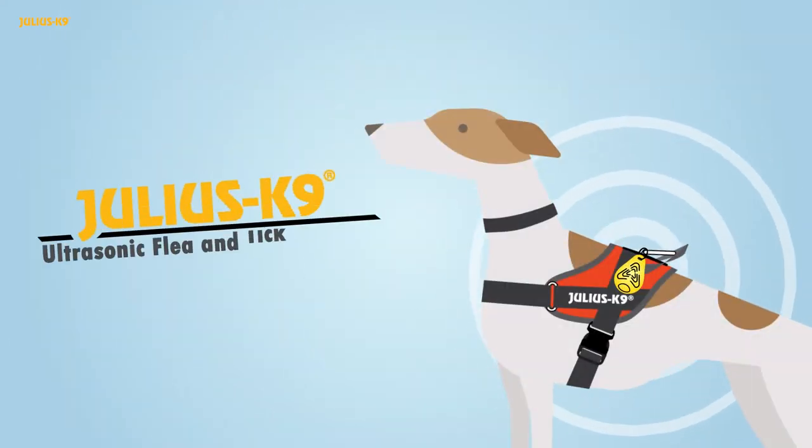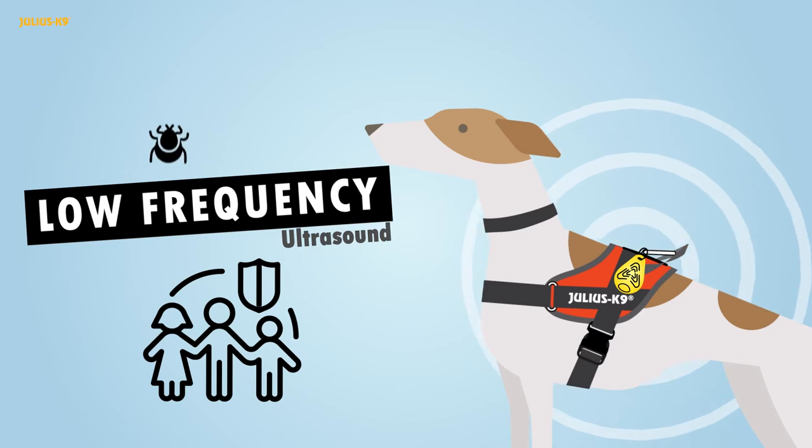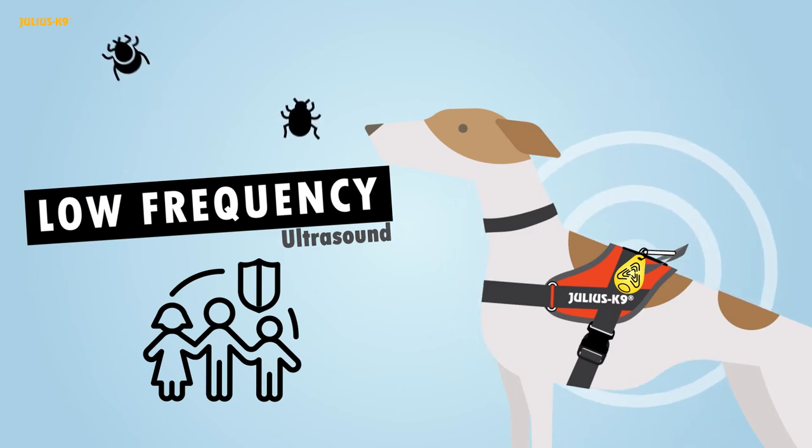The Julius K9 ultrasonic flea and tick repeller emits a low-frequency ultrasound that is inaudible to humans and pets, but easily audible to ticks and fleas, disturbing their orientation.